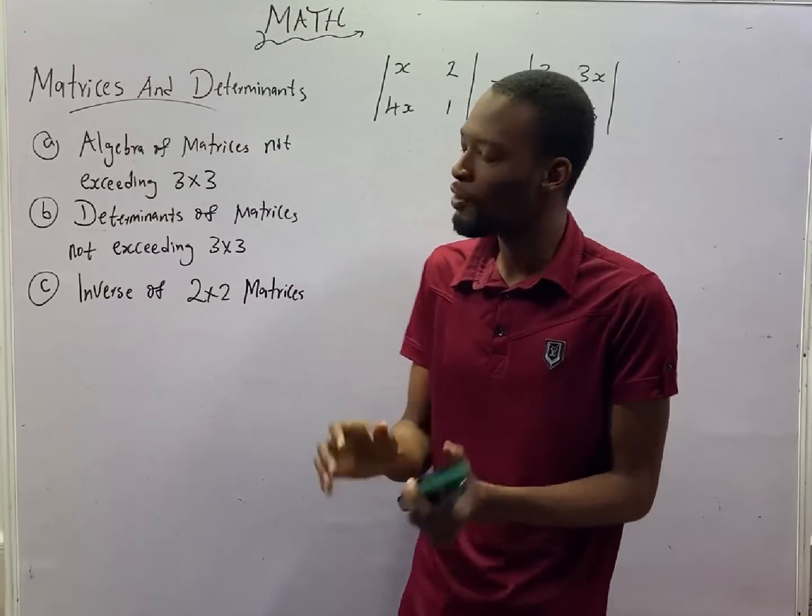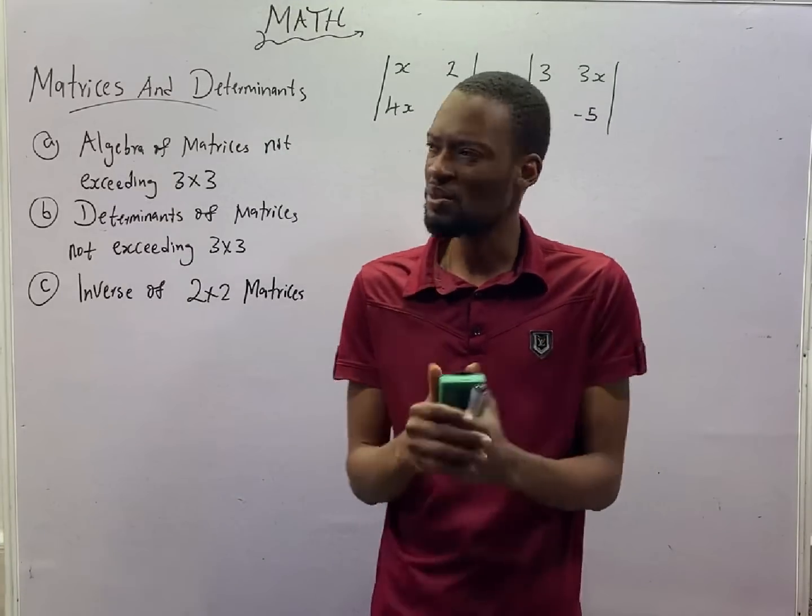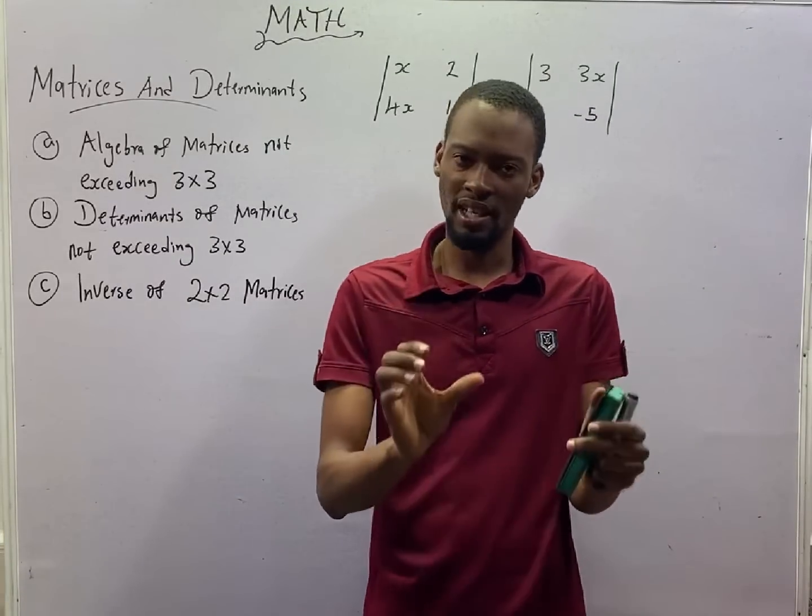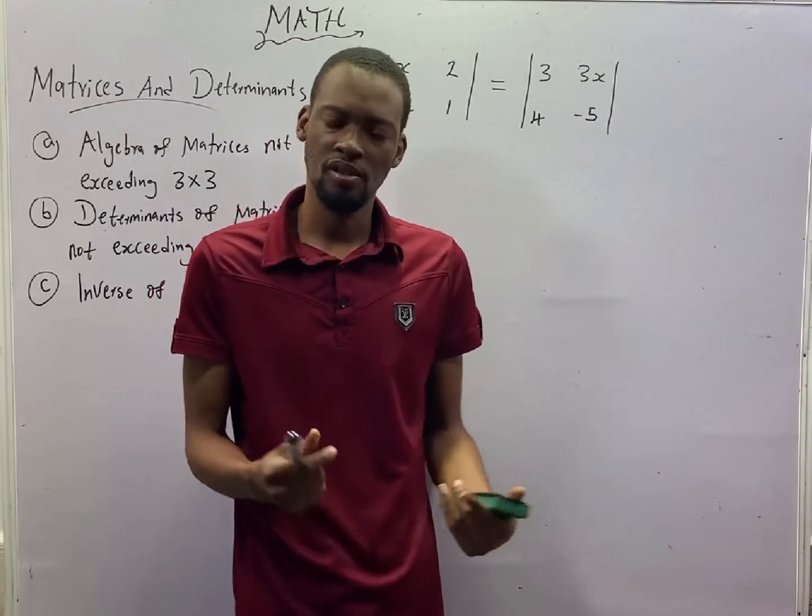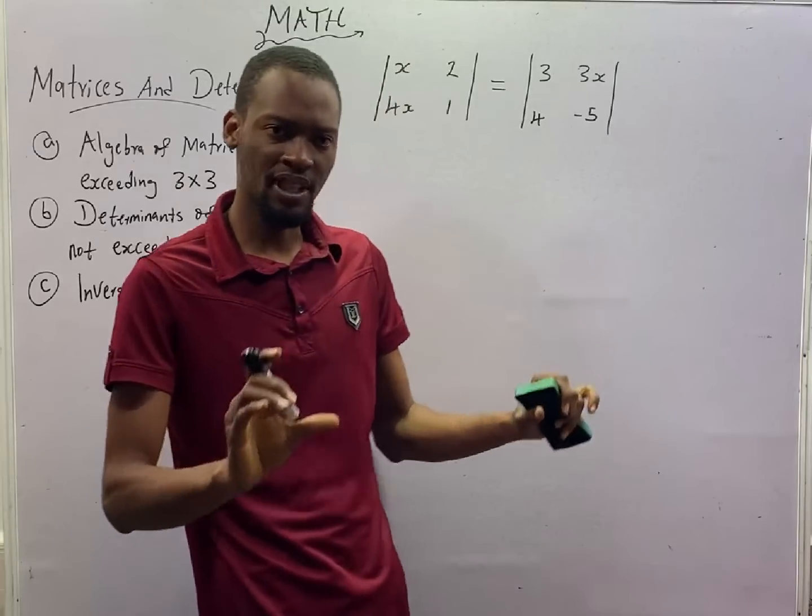This is episode number 54 of the 120 Days to JAM Mathematics with Flash Isaac. In this episode, we shall be looking at questions under matrices and determinants.